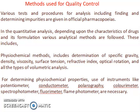The methods used for quality control — various tests and procedures for analysis including finding and determining impurities — are given in official pharmacopoeias. In quantitative analysis, depending upon the characteristics of the drugs and their formulation, various analytical methods are followed. This includes physicochemical methods such as determination of specific gravity, density, viscosity, surface tension, refractive index, and optical rotation.